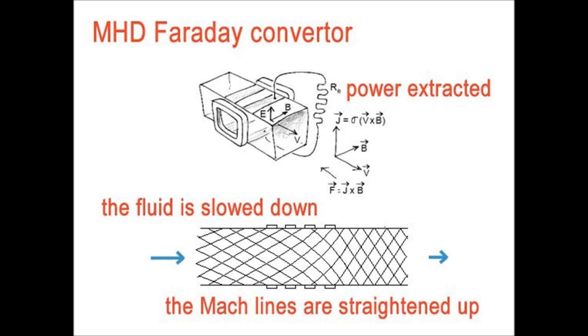Well, when we work with the MHD Faraday converter as a generator of electricity, the fluid is slowed down, the power is extracted, and the Mach lines are stretched and straightened up.